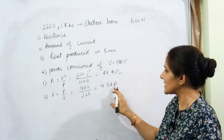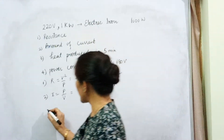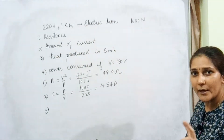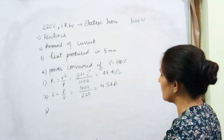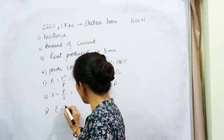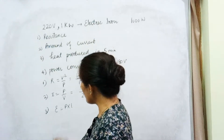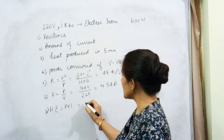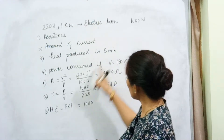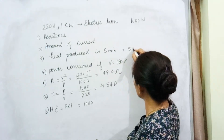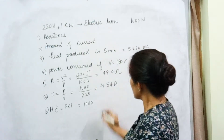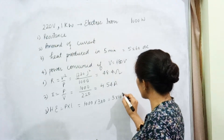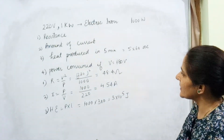If the value of the current exceeds 4.54 ampere, the heating element will be damaged. Third, they are asking what is the heat energy produced in five minutes. Energy consumed is given by power × time. Heat energy = power × time = 1000 watt × (5 × 60) seconds = 1000 × 300 = 3 × 10⁵ joule.